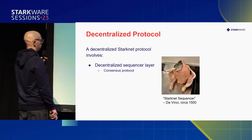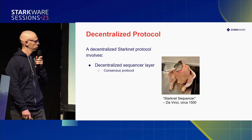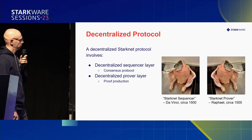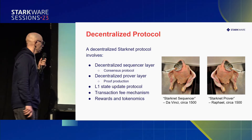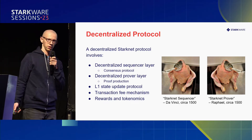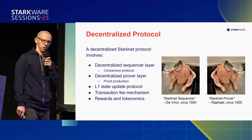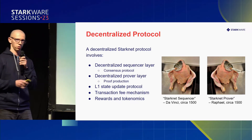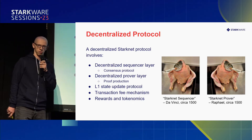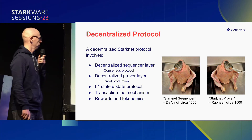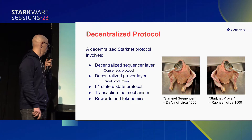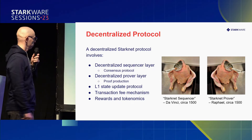So what does a decentralized protocol actually involve? First, we need to decentralize the sequencer layer, which right now is operated only by Starkware. We also have to decentralize the proving layer. There are a few more things: we need to decentralize the actual L1 state update protocol — people compute proofs, but something needs to happen with those proofs; they need to be verified on L1, and somebody has to post them. Another thing is the transaction fee mechanism, and the last question — also implicitly directed at Noam — is the whole question of rewards and tokenomics.